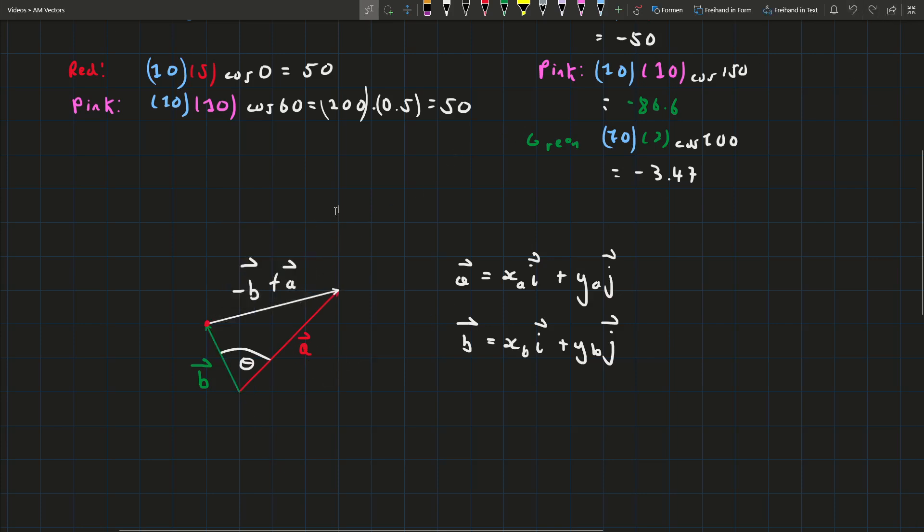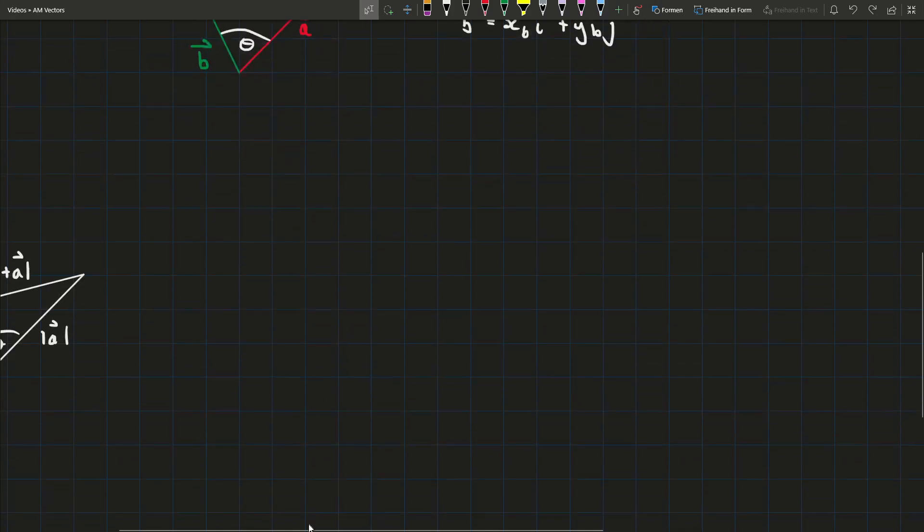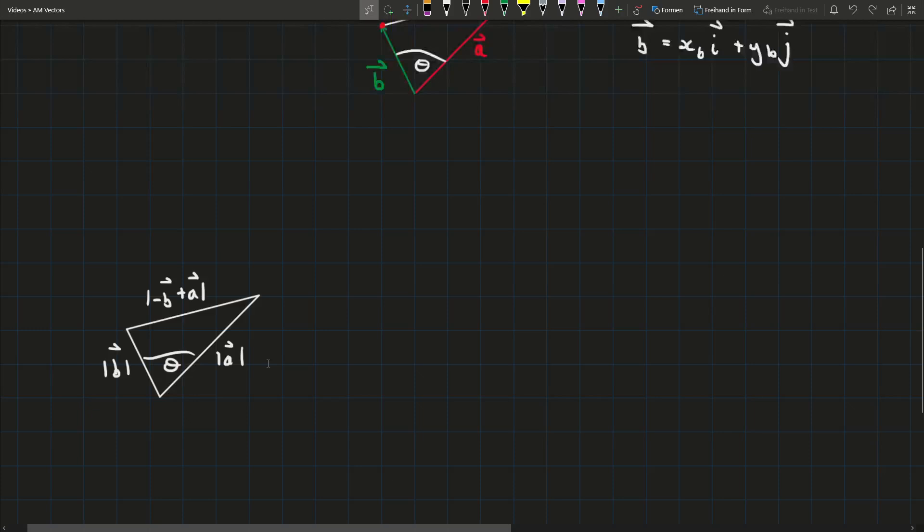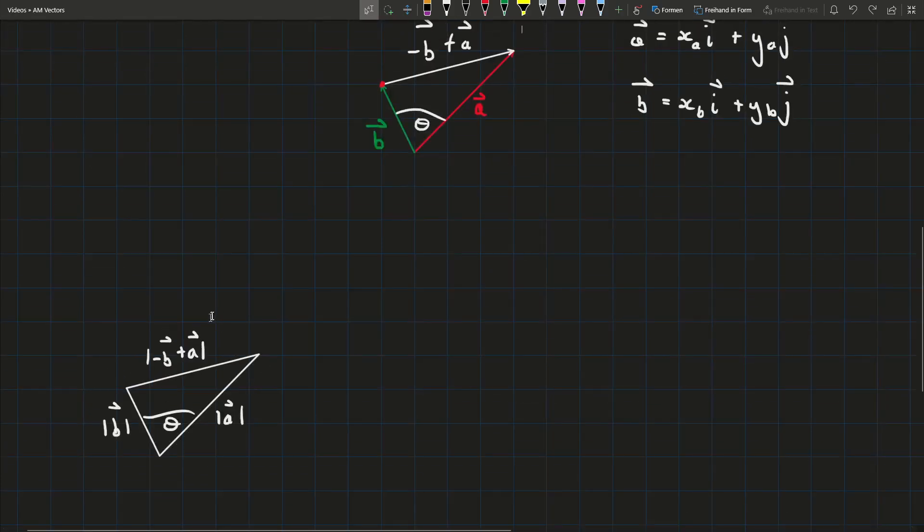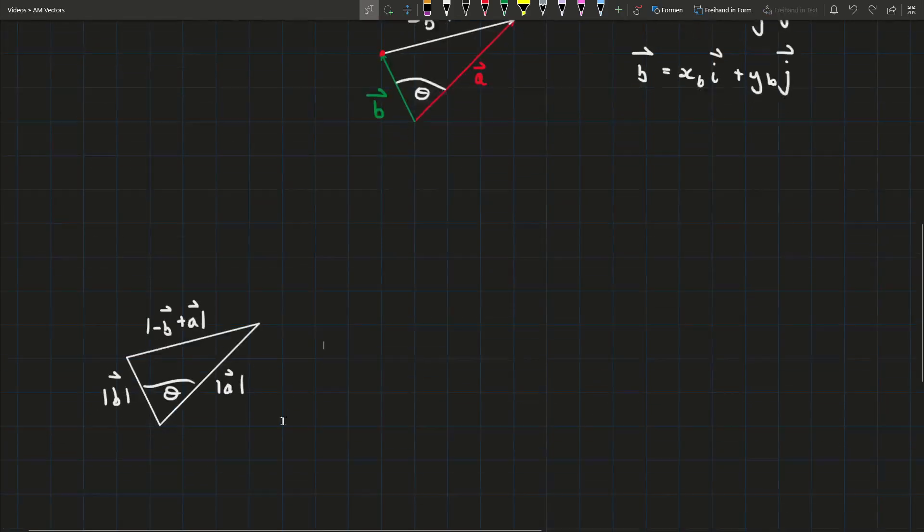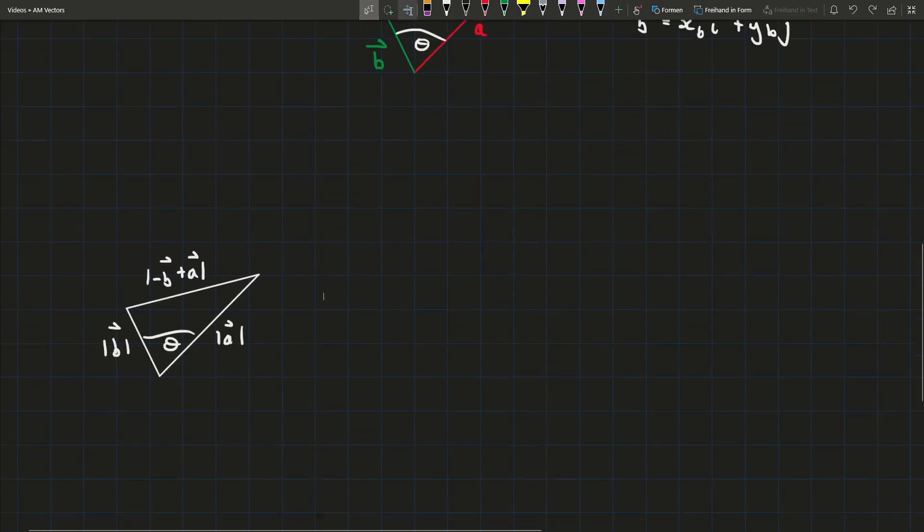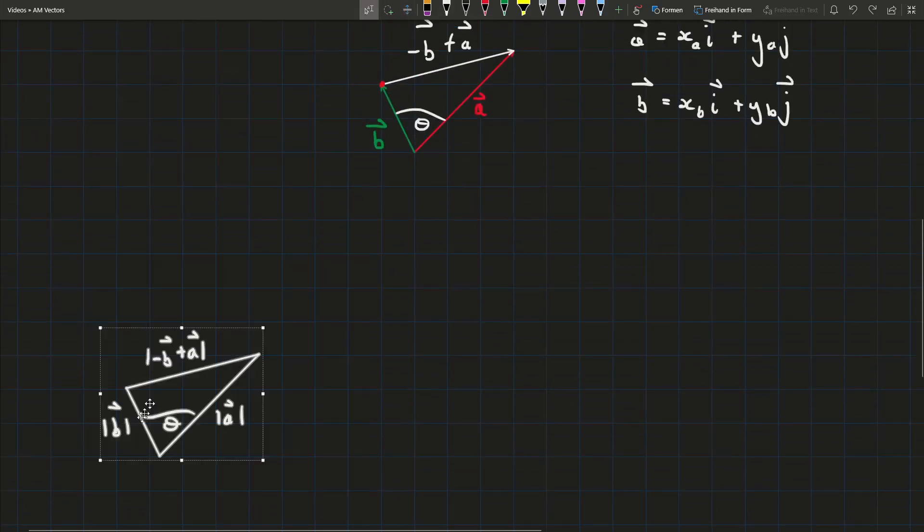So I'm going to redraw the diagram as I have it down here. So now we're talking about a triangle not vectors and these are all the magnitudes so now we just need to figure out what the magnitude of each vector is and the way we can do that is using Pythagorean theorem. I'll show the formula for the first one but I won't for the rest of them.